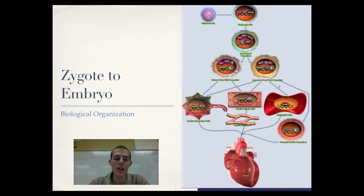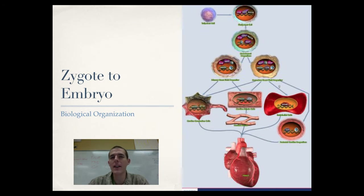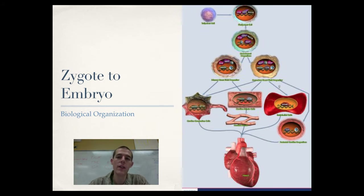We need to recognize this biological organization hierarchy. Cells are organized into tissues. Tissues are organized into organs. Organs are organized into organ systems, and organ systems make up an organism. At the level of a tissue you've got kind of one type of cell, but if you're looking at an organ system, you've got all kinds of different cells working together. I wanted to get that organization hierarchy in your head before we moved forward.